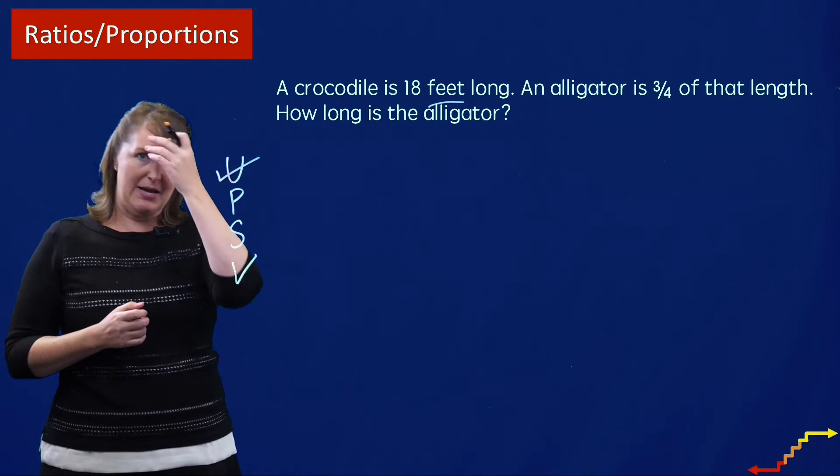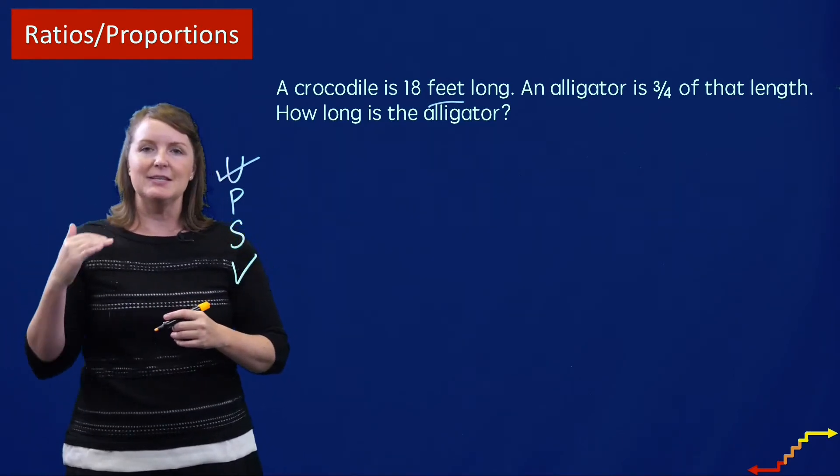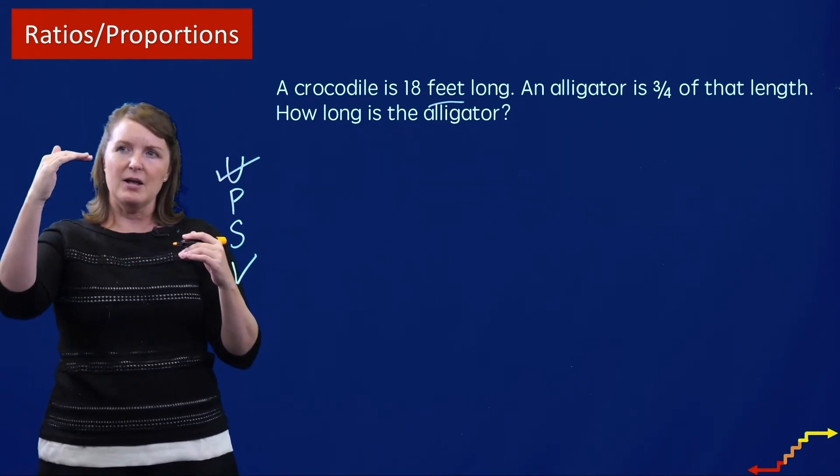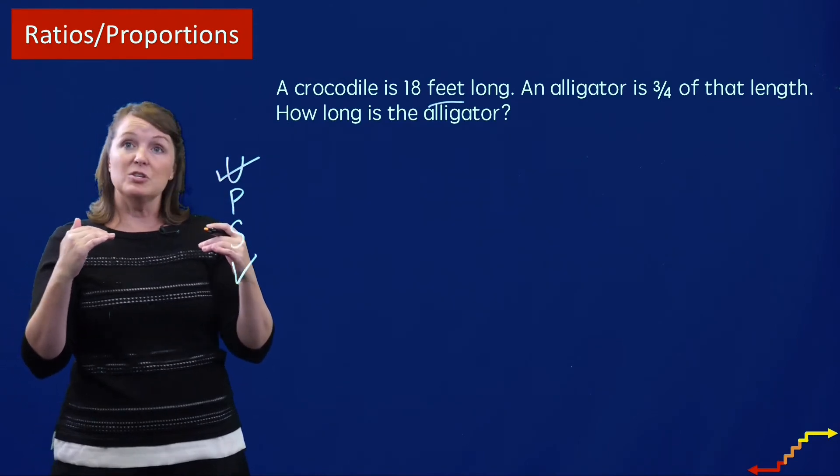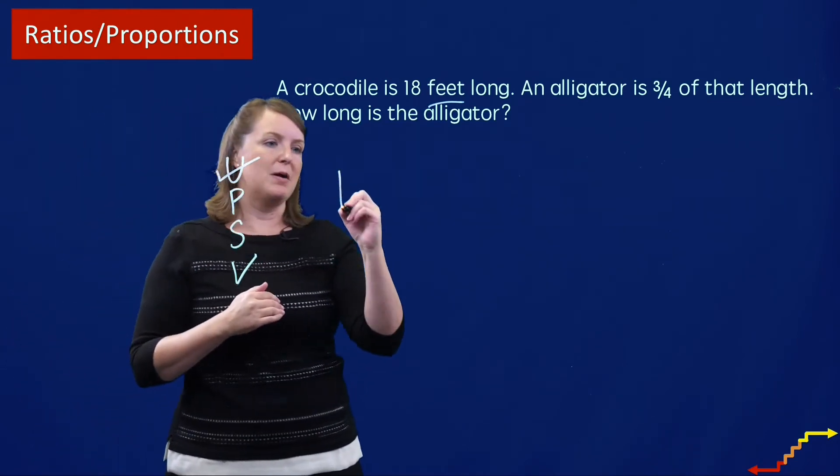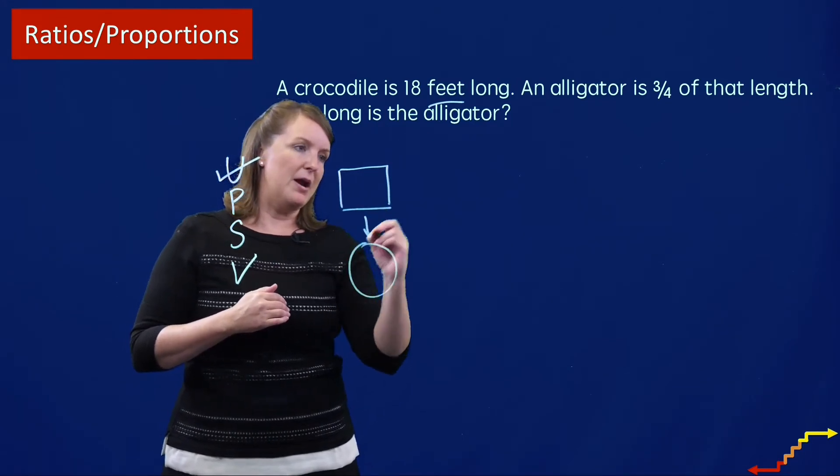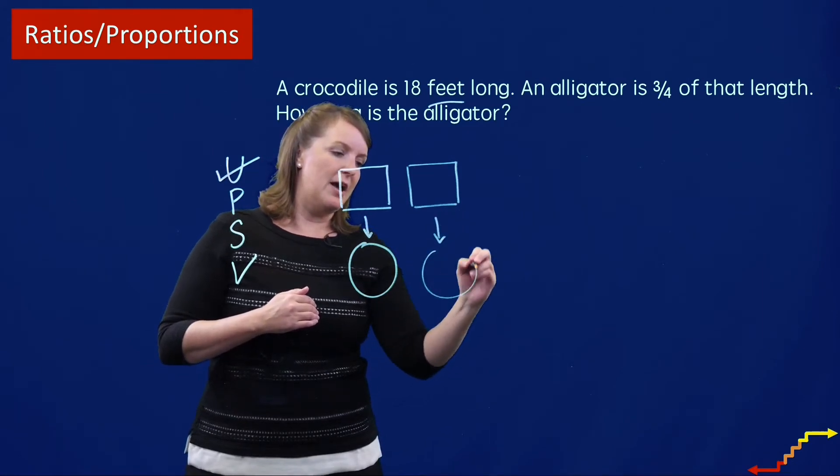Now I need to make a plan. So I could ask myself, well, is this a problem where if this is to that, then this is to that? So right now I'm thinking about the crocodile to the alligator, the crocodile to the alligator. So I'm going to solve this as a ratios and proportions problem. And I'm going to draw my graphic organizer because I'm comparing the length of the crocodile to the length of the alligator.